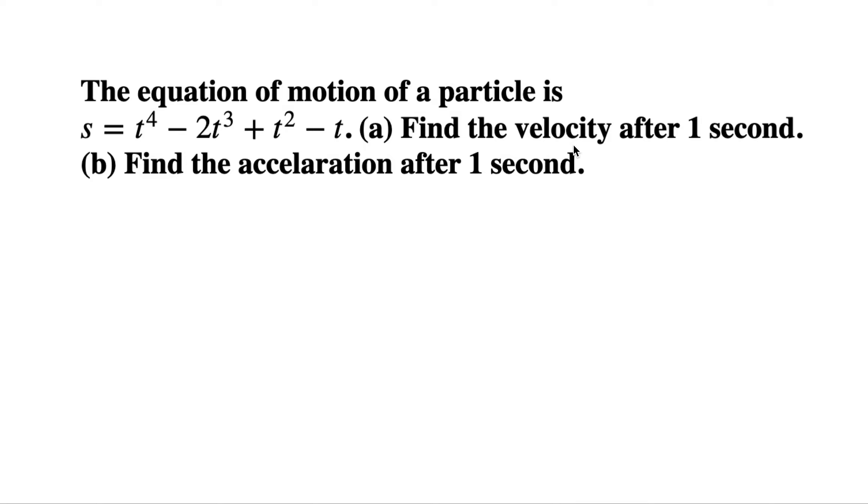Velocity is the rate of change of position, and this is the position or the motion—height, same thing. We find the first derivative and plug in one second, meaning t equals one, which gives us the velocity after one second. When we take the derivative of velocity, we get the acceleration, and again we plug in t equals one.